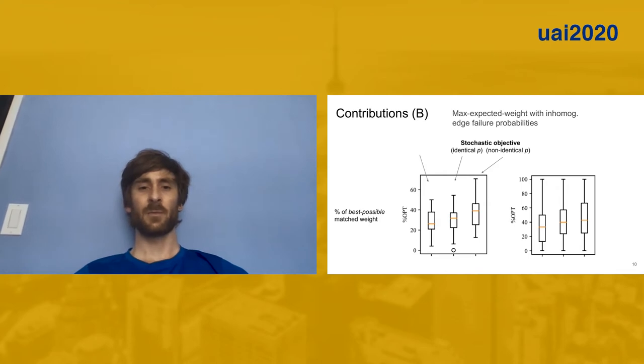Just to illustrate the benefit of this approach, again, I'm showing here three different approaches: the deterministic or max weight objective, the stochastic objective using identical edge failure probabilities, which is previous work, and then on the far right hand side here is our non-identical edge failure probability. This right hand bar is our approach. What I'm showing here is the percent of the best possible matched weight compared to an omniscient approach. Again, we can see a fairly clear improvement of using non-identical edge failure probabilities.